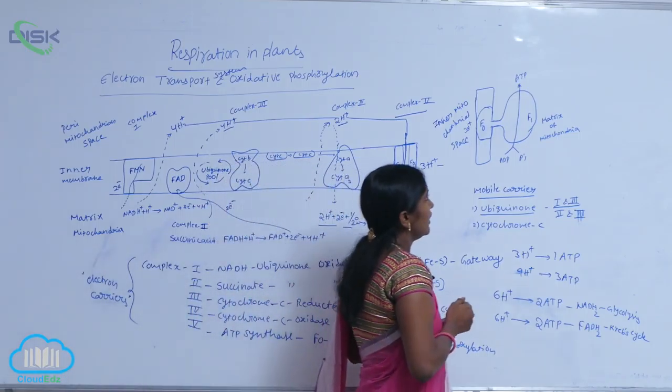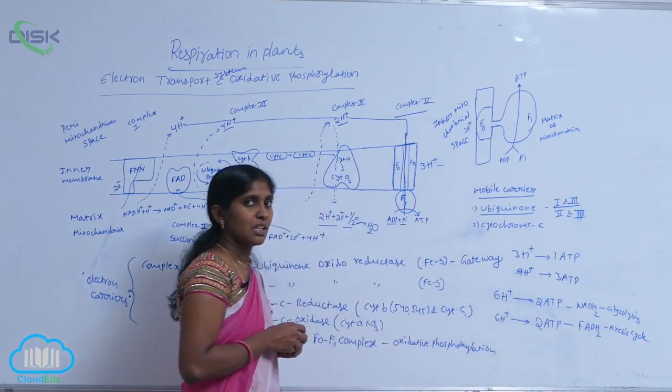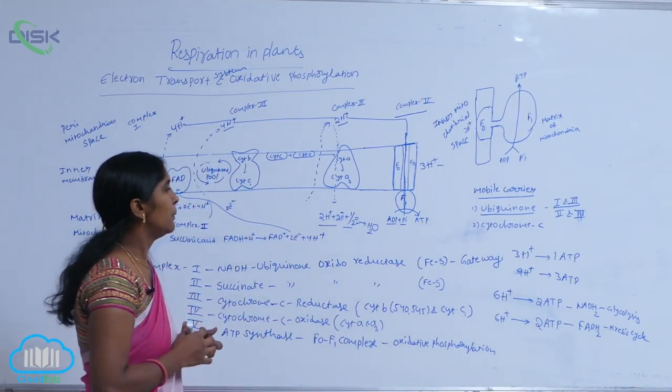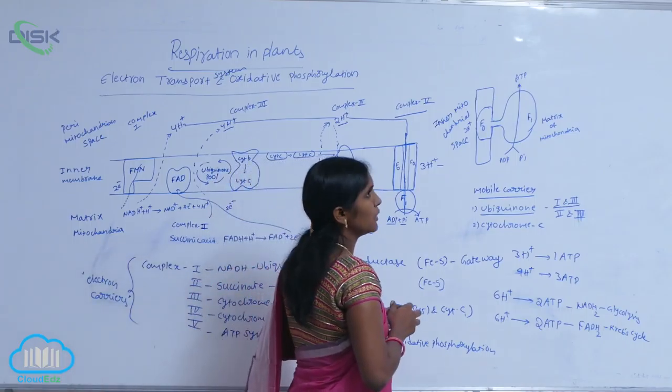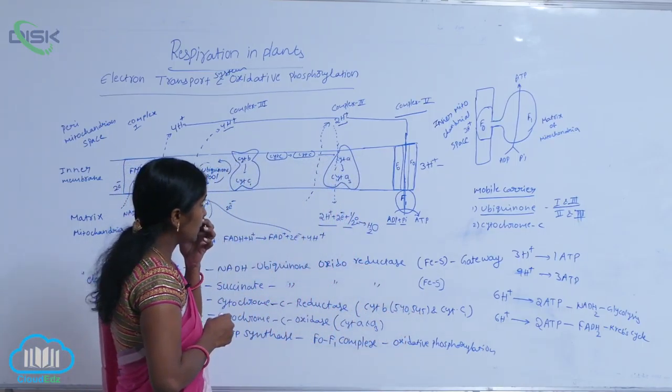Oxidative phosphorylation is explained by scientist Mitchell through the chemiosmotic hypothesis. According to this hypothesis,